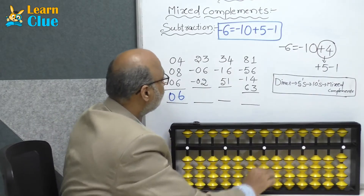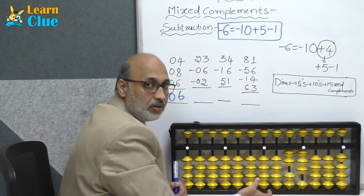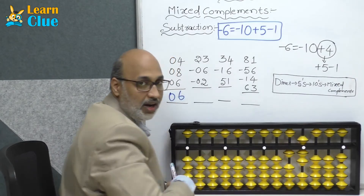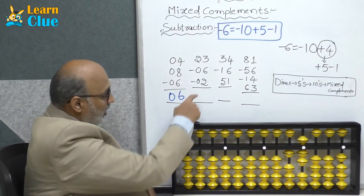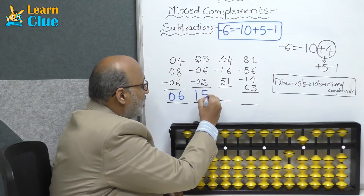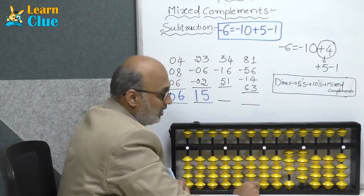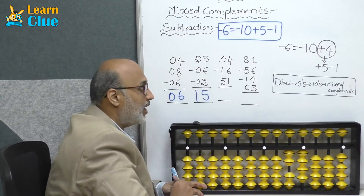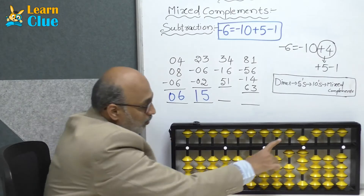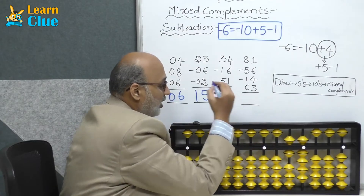Next problem: 23 minus 6. How to do minus 6 here? The same way — minus 10 plus 4 is not possible, then what we are supposed to do is minus 10 plus 5 minus 1. Now they are asking next number minus 2, which is available. The answer is 15. Next problem: 34 minus 16. Minus 10 minus 6. Minus 6 is nothing but minus 10 plus 5 minus 1. Now they are asking plus 51: plus 50 plus 1. The answer is 69.